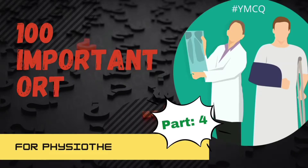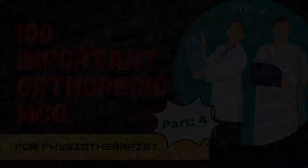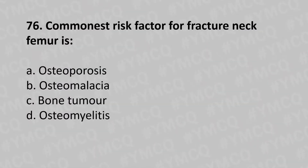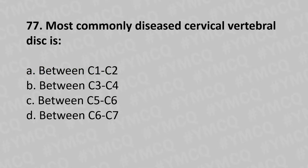Hello, welcome to the final part of this series, Part 4, moving to our 76th question. The commonest risk factor for fracture of the neck of femur is: option A osteoporosis, option B osteomyelitis, option C bone tumor, option D osteomyelitis. The answer is option A, osteoporosis. Moving to our 77th question: the most commonly affected cervical vertebral disc is option A between C1-C2,